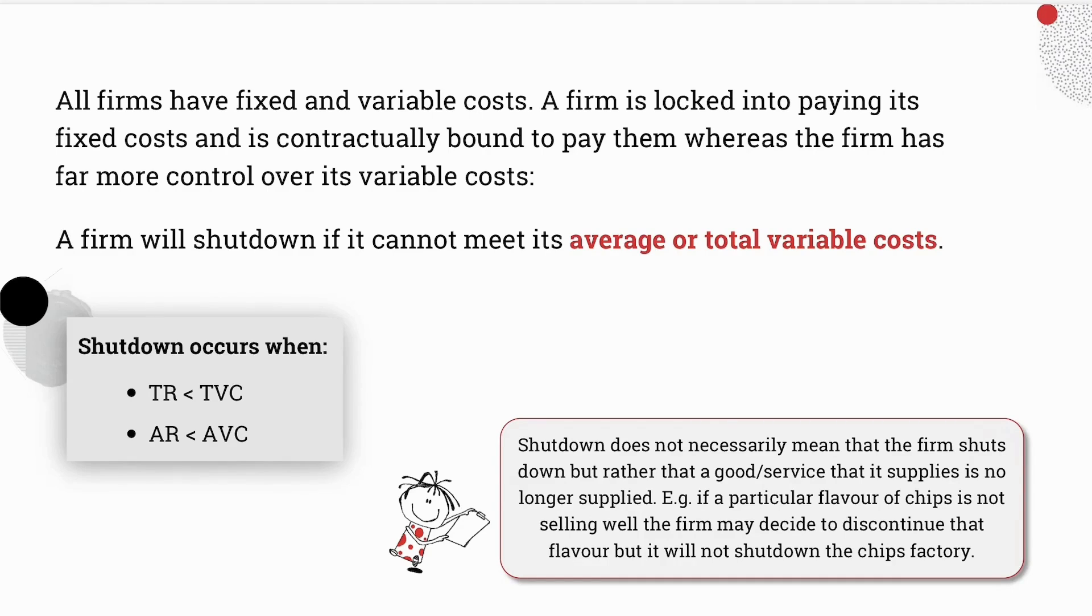A firm will shut down production when it cannot meet its average or its total variable costs. Another way of saying this is that shutdown occurs when the firm's total variable costs exceeds its total revenue, or alternatively when the firm's average variable costs exceeds its average revenue.